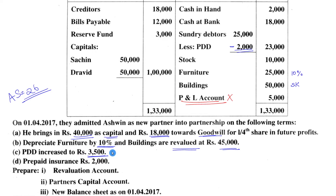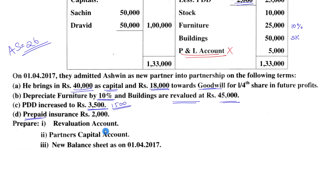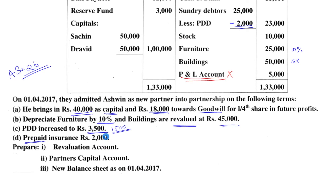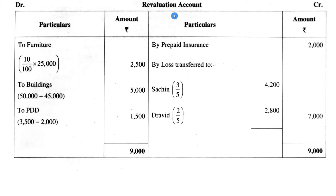Provision for doubtful debts increased to 3,500 means it includes the previous 2,000, so the current year increase is only 1,500 rupees. Prepaid insurance of 2,000 rupees is an expense paid in advance for the next year, so it's treated as a deemed income. We are asked to prepare the revaluation account, partners capital account, and new balance sheet.